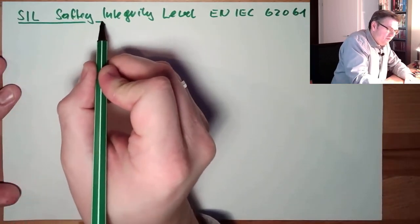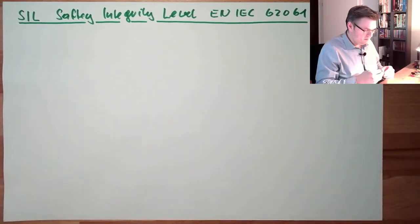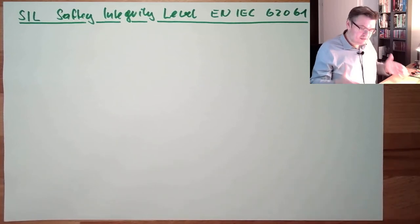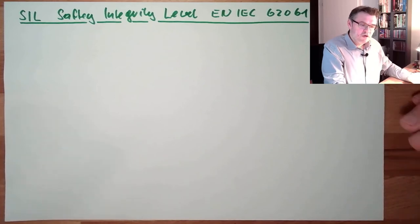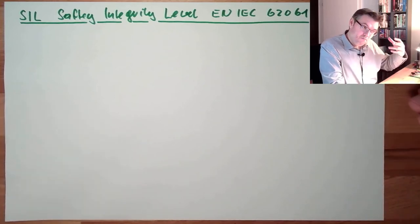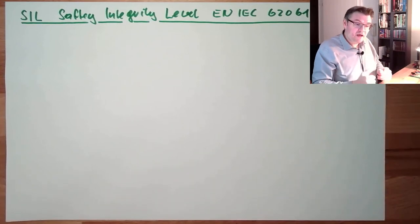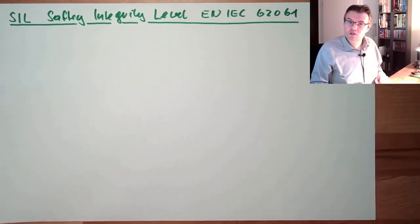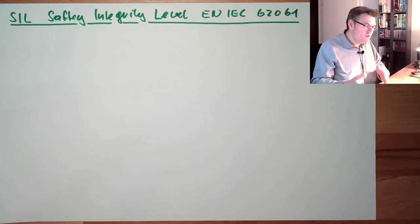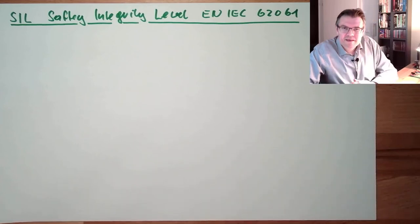Last video we talked about the Performance Level. Safety Integrity Level is pretty much the same. We distinguish what is the necessary SIL level, and then we do an assessment of what is the reached SIL level. The reached SIL level must be higher or equal to the necessary SIL level.